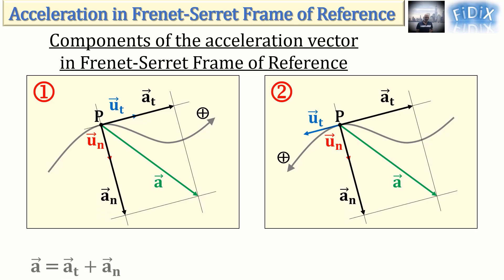Such that a = a_t + a_n, which is also equal to a_t u_t + a_n u_n, where a_t and a_n are respectively the tangential and normal scalar components of vector a.